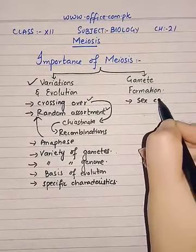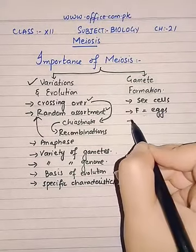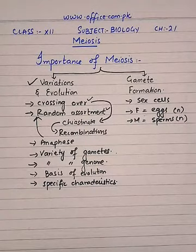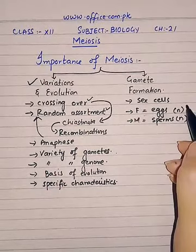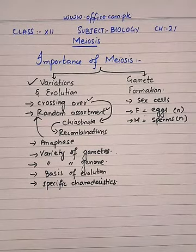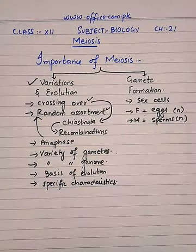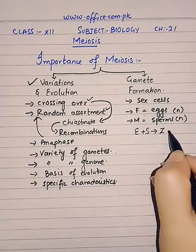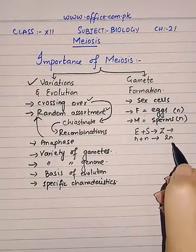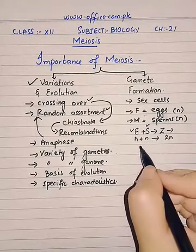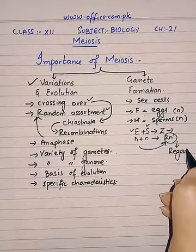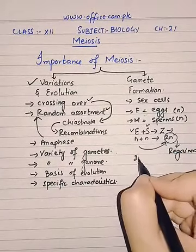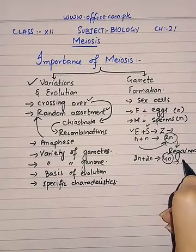The second important phenomenon is gamete formation. Gametes are basically the sex cells — for females they are eggs and for males they are sperms — and both will be haploid. Nature has created this phenomenon to maintain a certain diploid number of chromosomes in an individual. The gametes formed will have chromosomes reduced to half. When eggs and sperms join to form a zygote, that zygote will have n plus n, which equals 2n chromosomes. If there were no reduction of chromosomes, 2n plus 2n would give 4n and the chromosome number would have doubled.